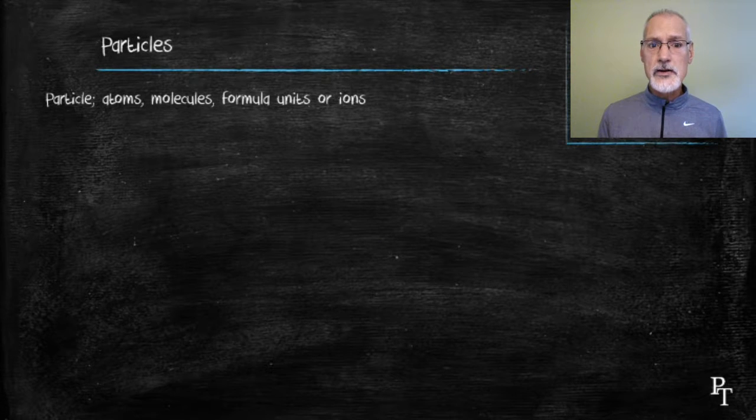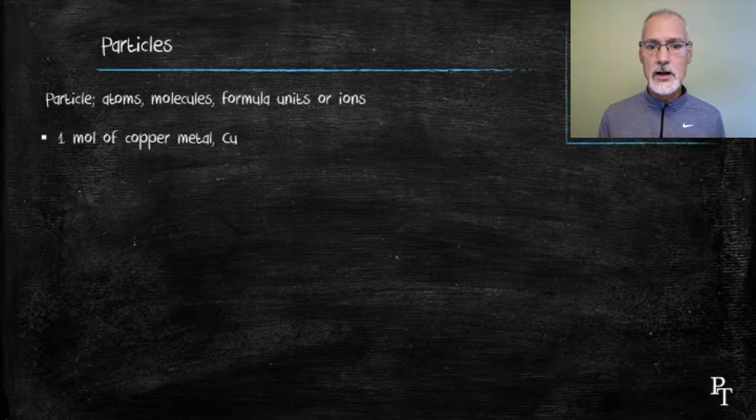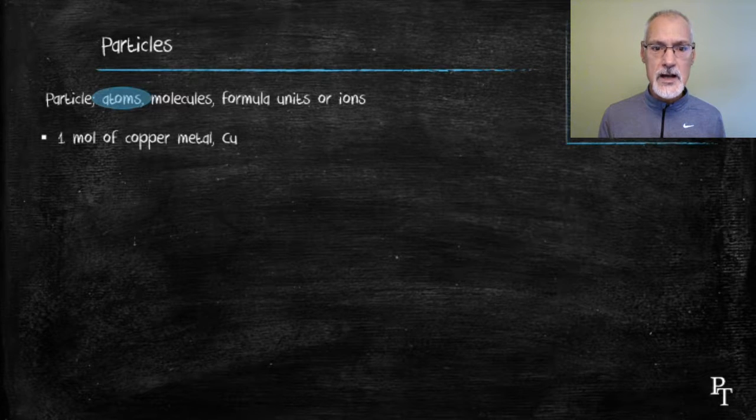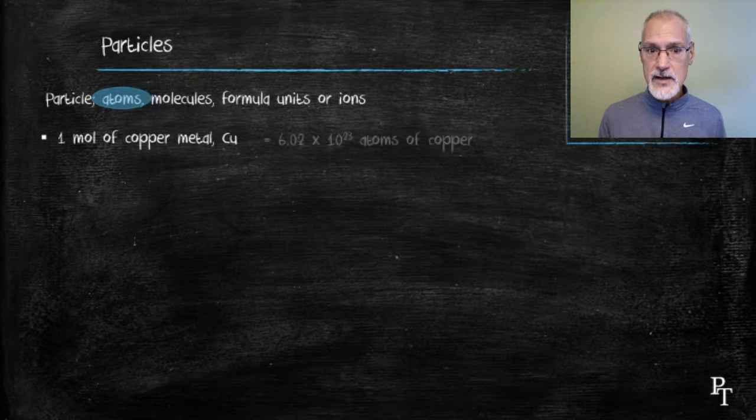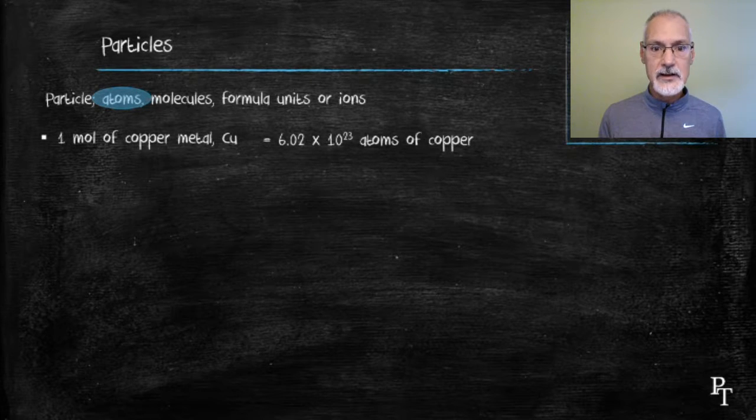Now, 6.02 times 10 to the 23rd particles. Particles could take on a variety of meanings. For instance, if I talk of one mole of copper, that would mean I would have 6.02 times 10 to the 23rd atoms of copper. That's because copper being an element, the particle that makes up an element is an atom.